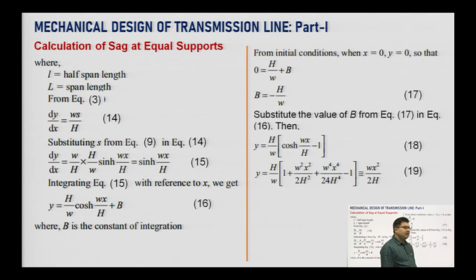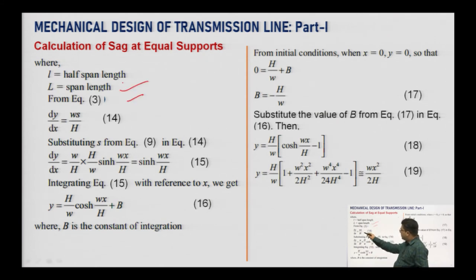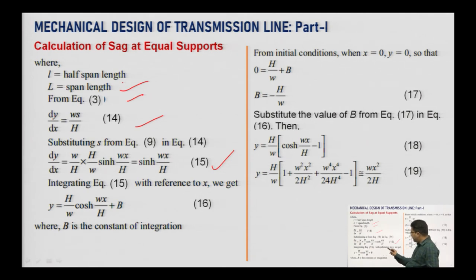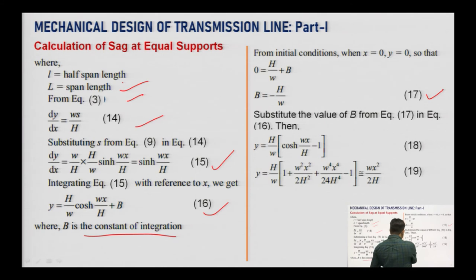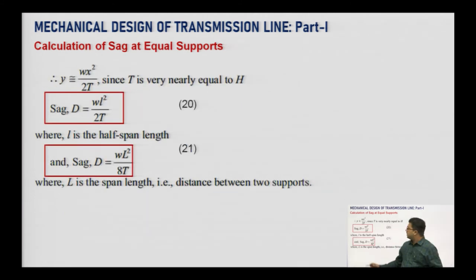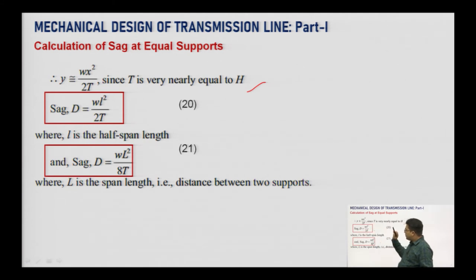From these equations, substituting and integrating with respect to x, we get y = w/(2H) · x² + B, where B is the constant of integration. Applying initial conditions (x → 0, y → 0) gives B = 0. Therefore, y = wx²/(2T), since T ≈ H. The sag d = wL²/(2T), where L is the half-length of the span. For the full span, equation 21 is used. This is the fundamental sag formula for equal-height supports.